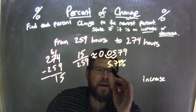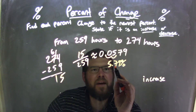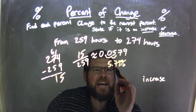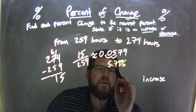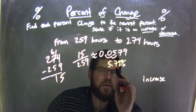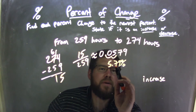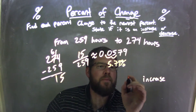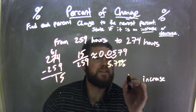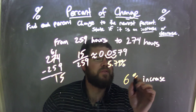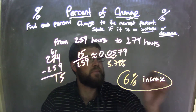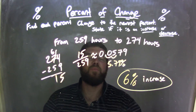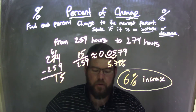I just care about the number right next to the decimal — it's a 7. That 7 is 5 and up, so it's greater than or equal to 5. The 7 causes that 5 to round up, so we actually have a 6% increase here.